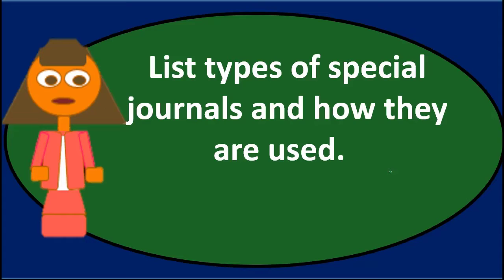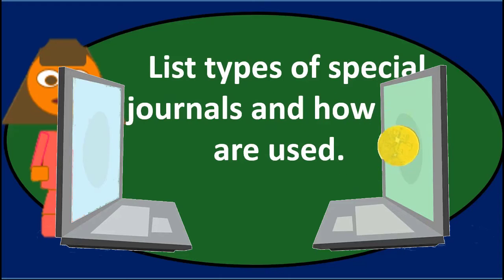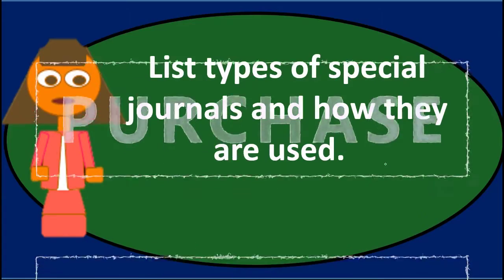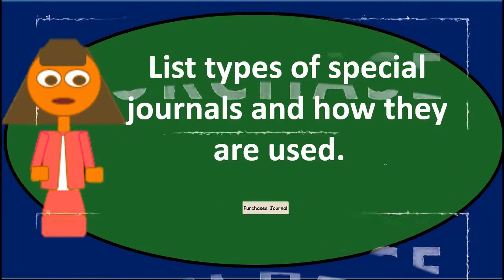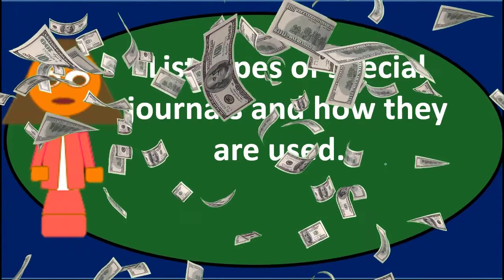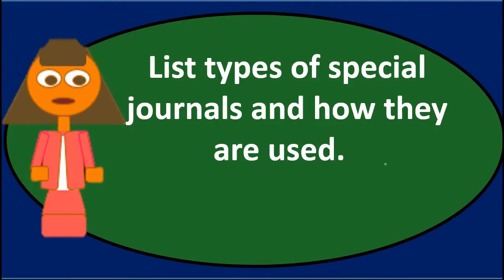The types of special journals are grouped by similarities in transactions. If we have a sale on account, we put that in the sales journal. If we have a purchase on account — meaning we purchase something like inventory on account — we put that into the purchases journal. If we are expending cash, we can group all those transactions into a cash payment journal, and anytime we receive cash, we can group those into a cash receipts journal.